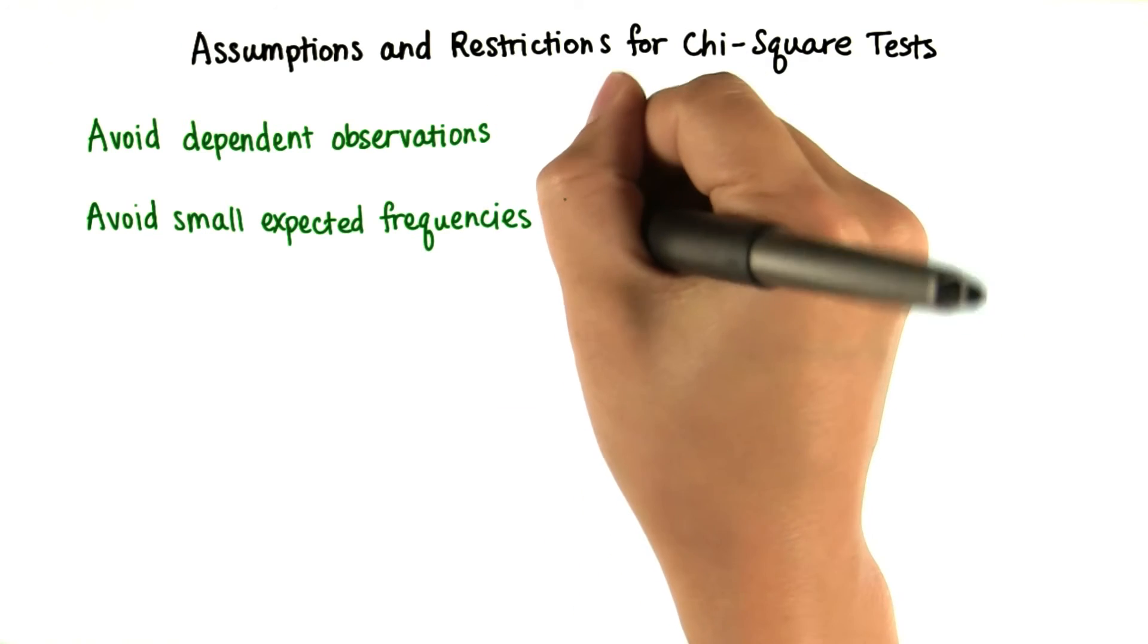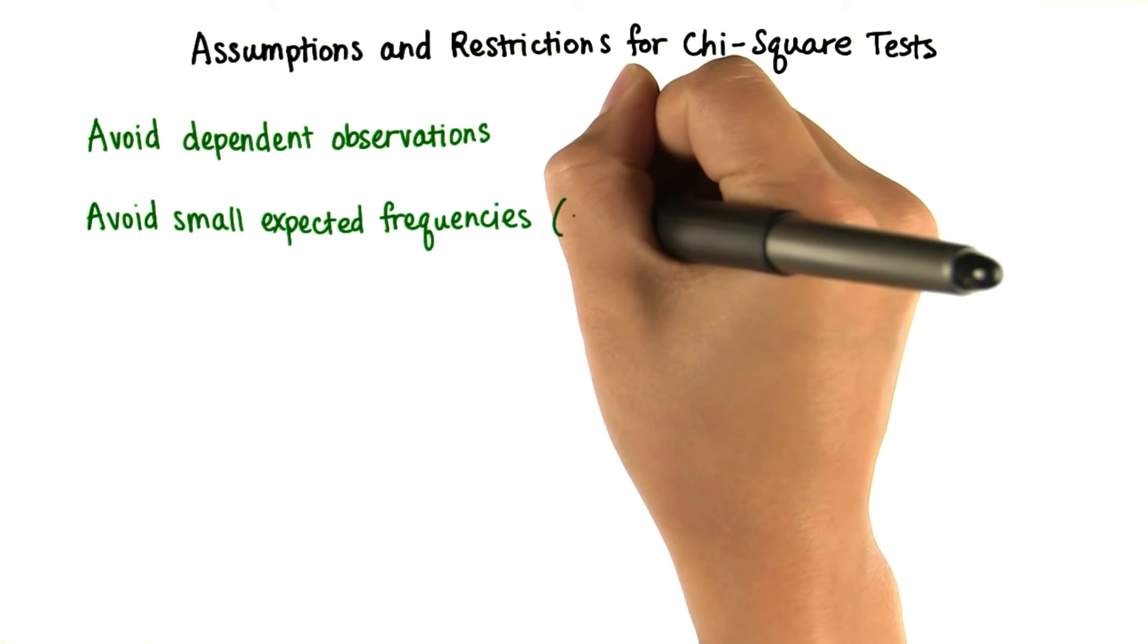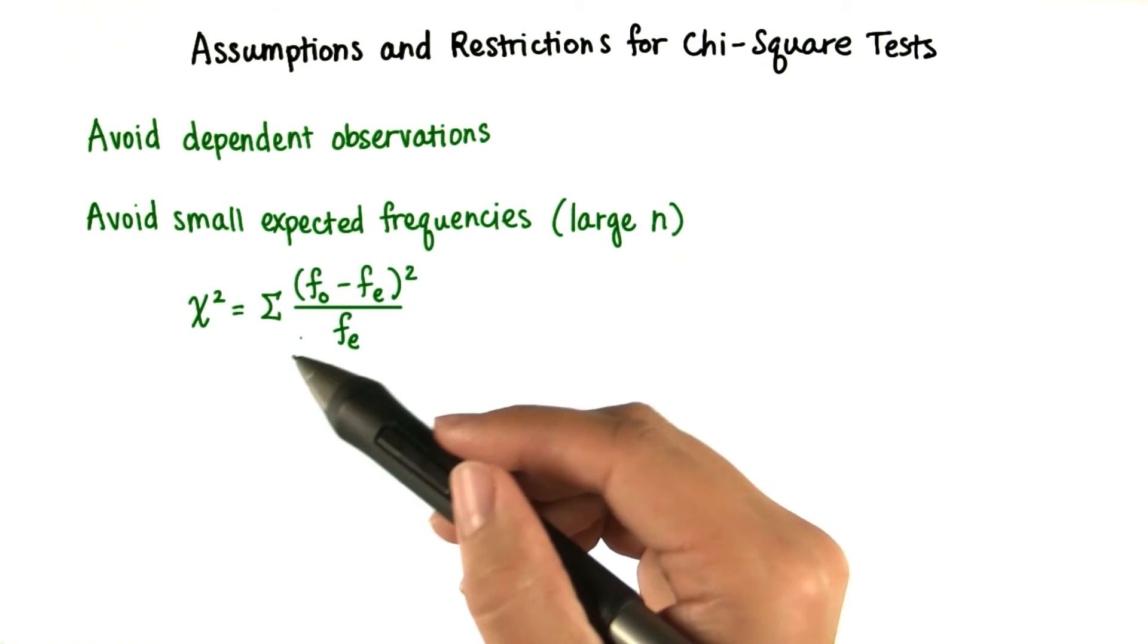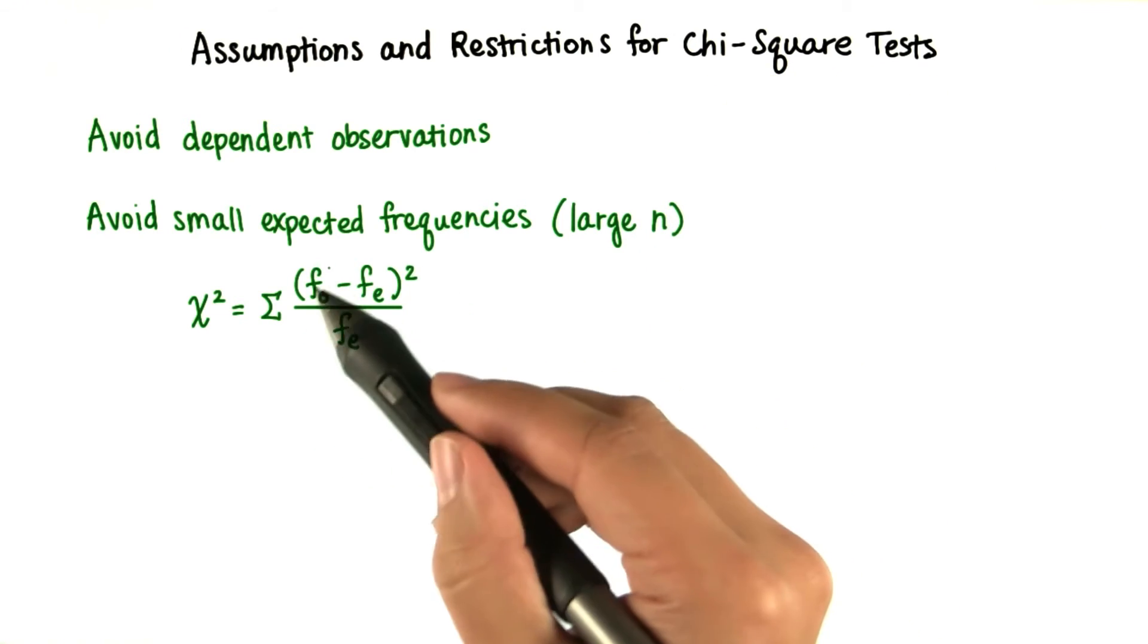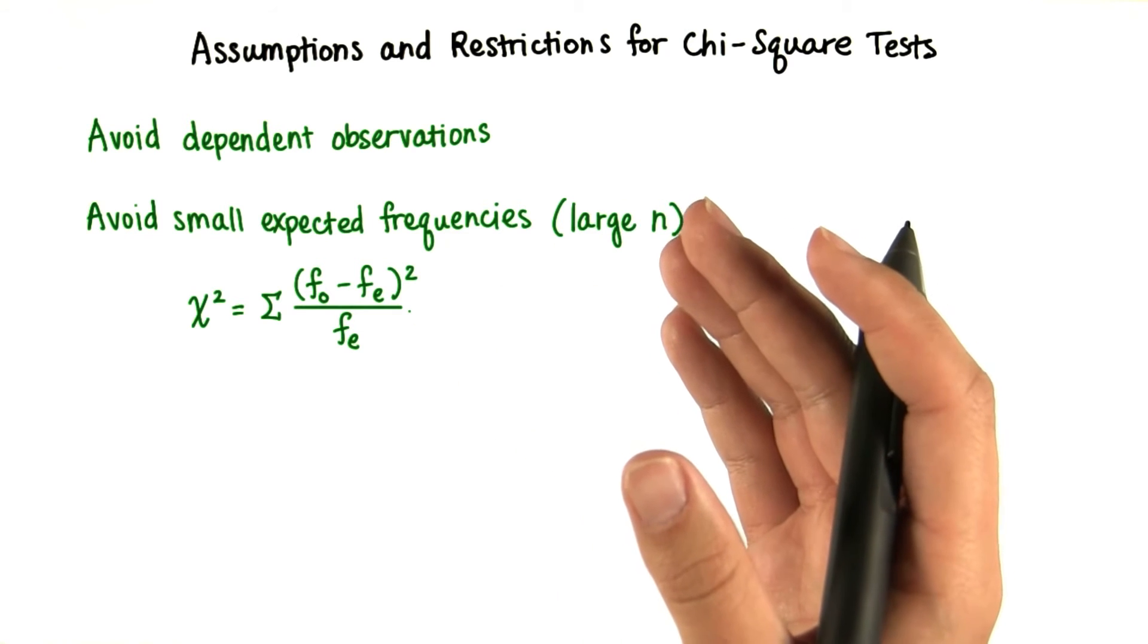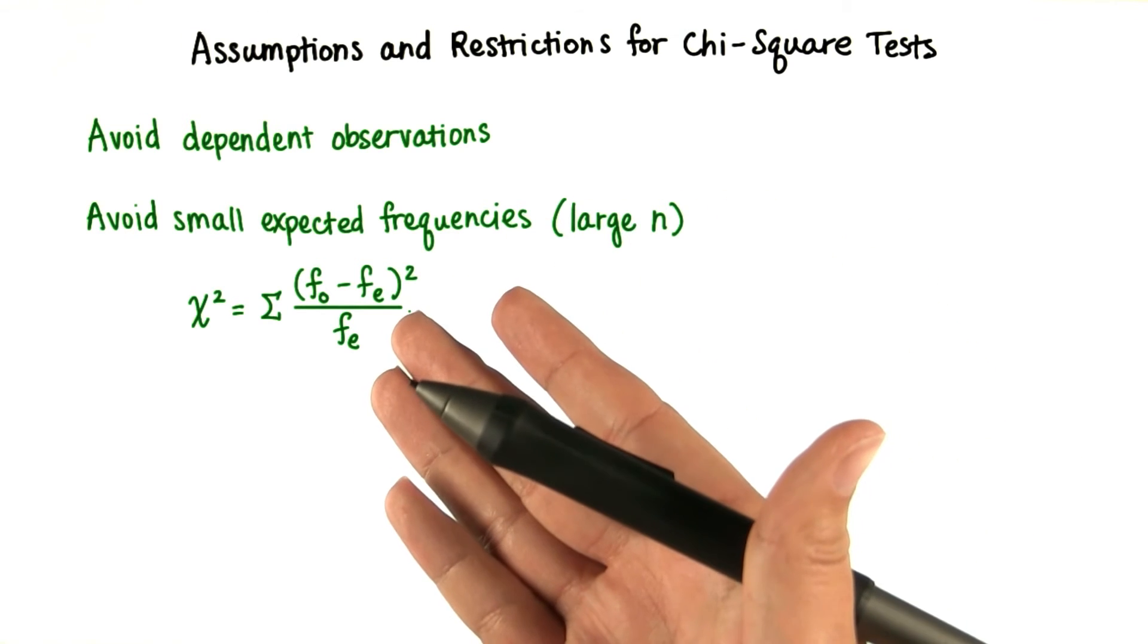Another thing we should do is avoid small expected frequencies, and in general have a large number of participants. Remember that our chi-squared statistic is just based off the sample. We have a sample of observations and corresponding expected values.